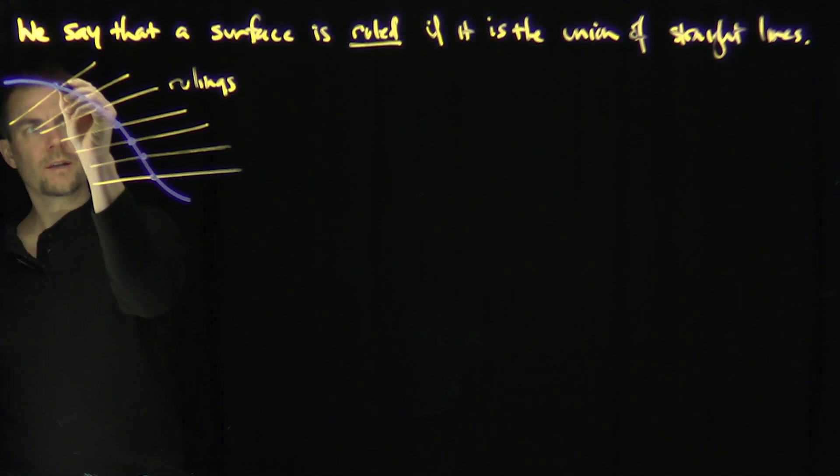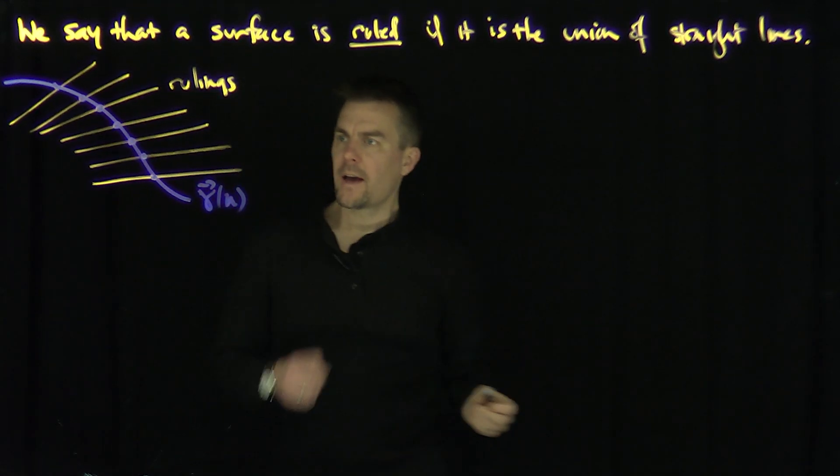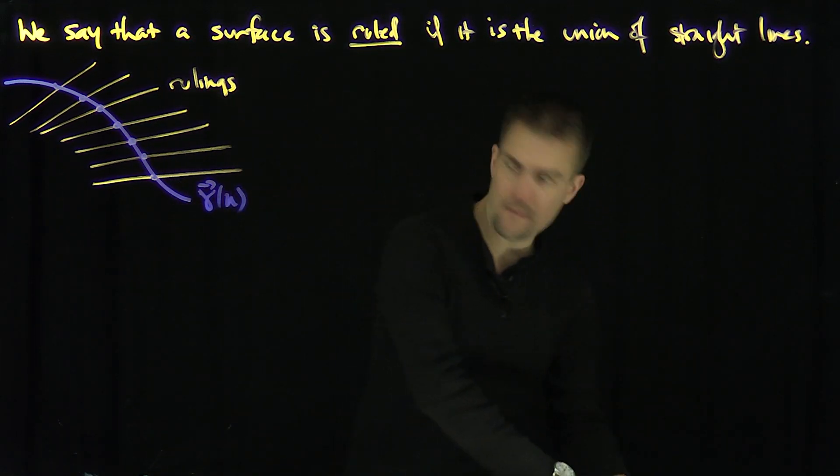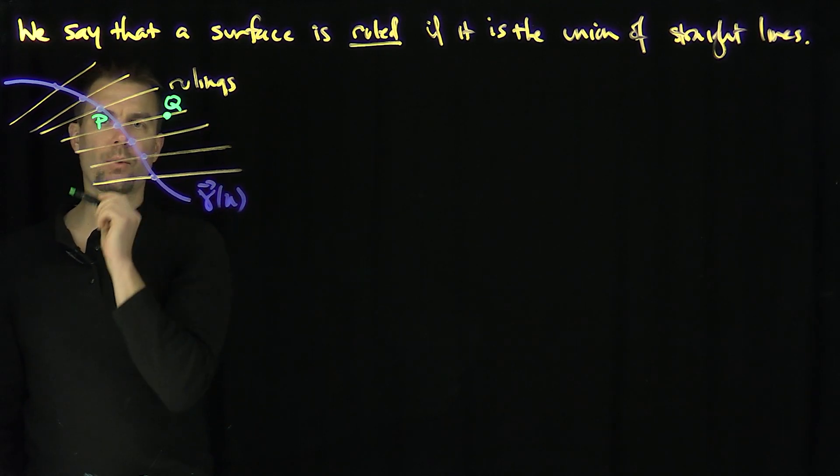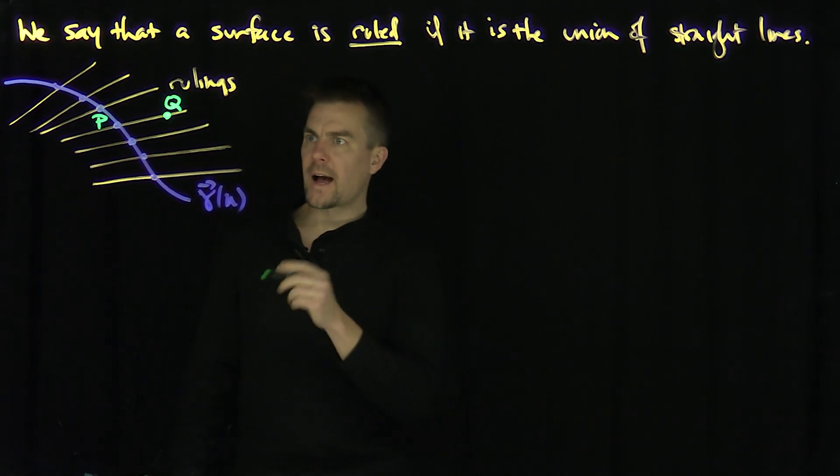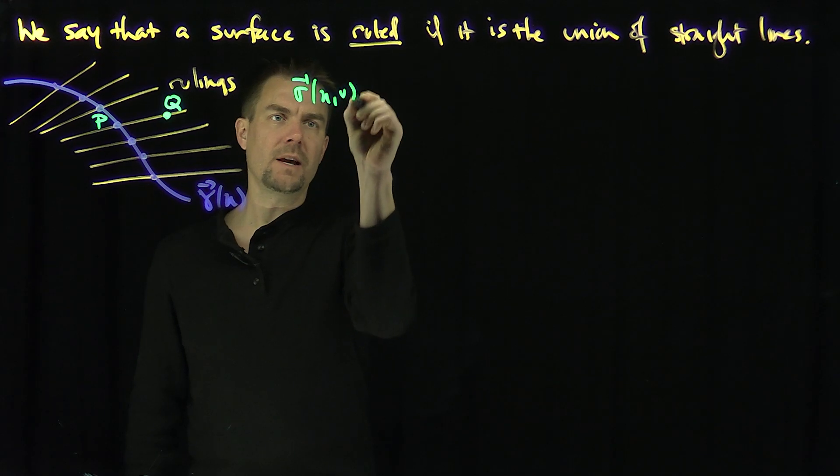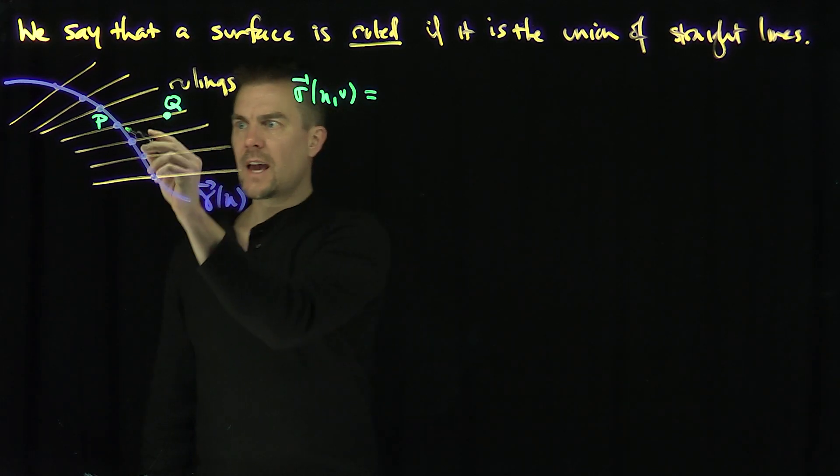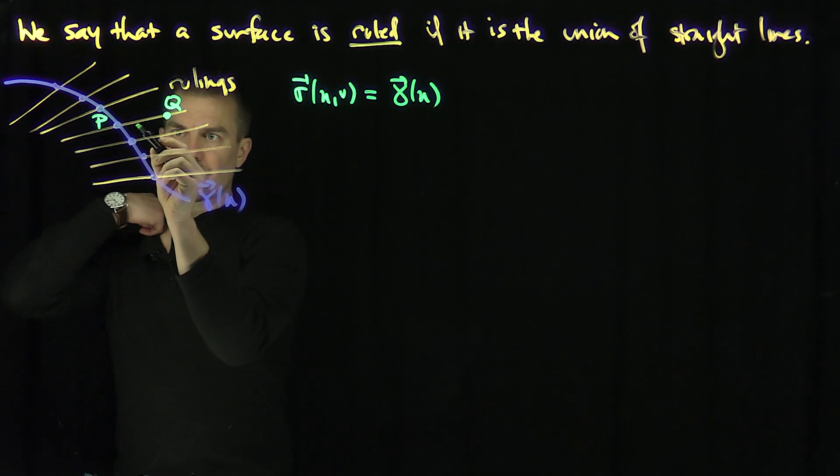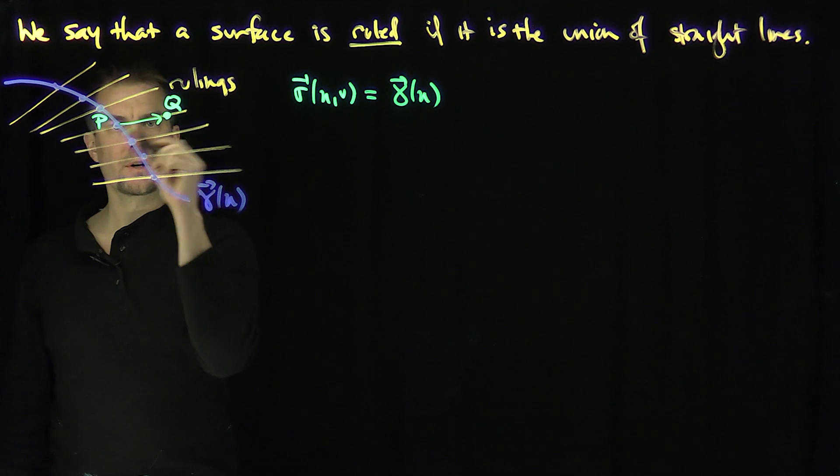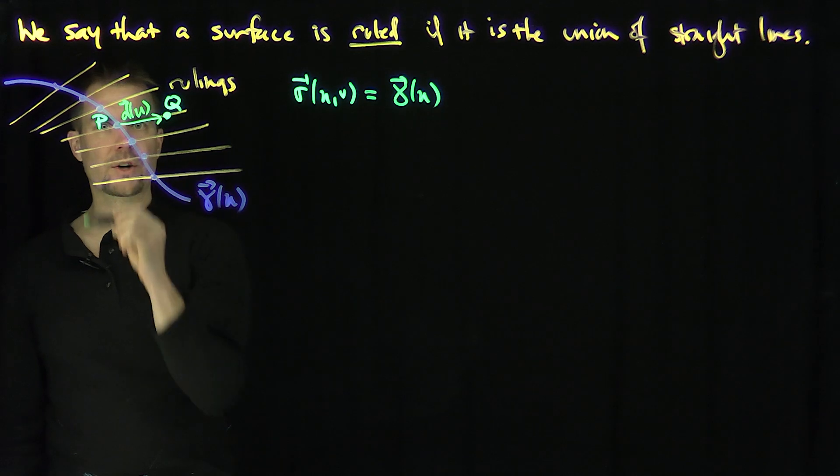I'm going to call this curve gamma of u. And then for any particular point on this surface, if I fix the point on the surface, let's call this point q, there's a corresponding point p that's on this curve. So I can parameterize this, sigma u and v, as I'm at the point gamma of u, and then I move a certain displacement in a certain direction. So this point has a particular direction. I'm going to call that direction d of u for that particular point. That's my direction of the lines.